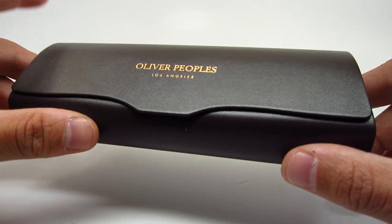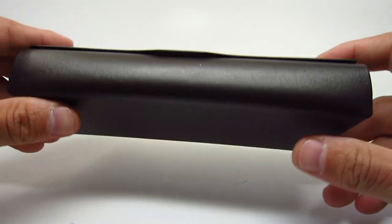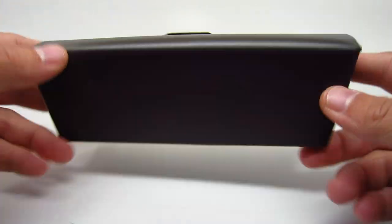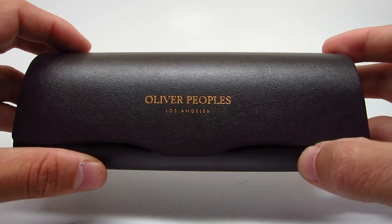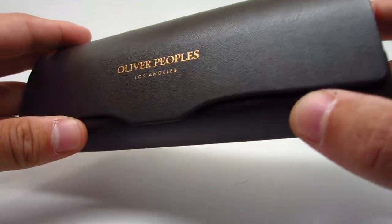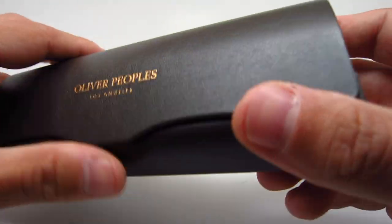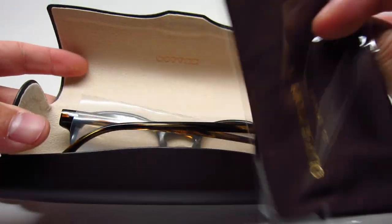So it's a nice brown hard case. It says Oliver Peoples Los Angeles on the front in gold, I think. Or copper. And on the inside we get the Oliver Peoples cloth.